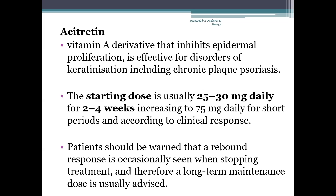Next is acitretin, a vitamin A derivative which inhibits epidermal proliferation and is effective for disorders of keratinization including chronic plaque psoriasis. The starting dose is usually 25–30 mg daily for 2–4 weeks, which can be increased to 75 mg daily for a short period according to clinical response. Mucocutaneous side effects like hair loss and lethargy are common. A rebound response is occasionally seen when stopping treatment, so long-term maintenance dosing is usually advised. Importantly, acitretin should be avoided in women of childbearing age due to teratogenic risk.